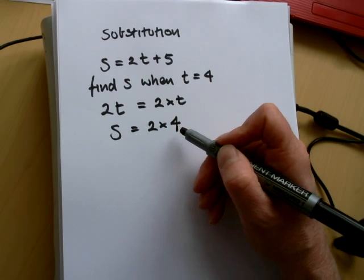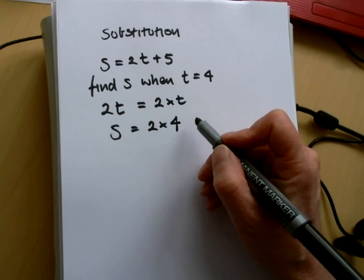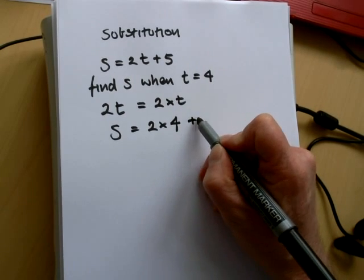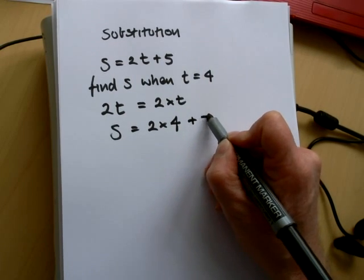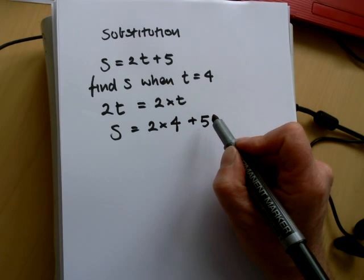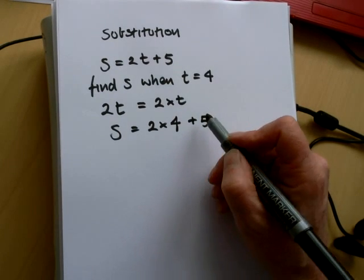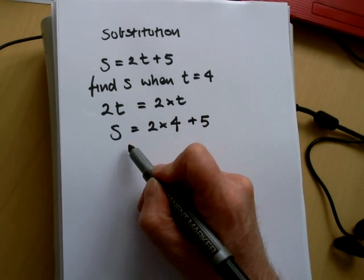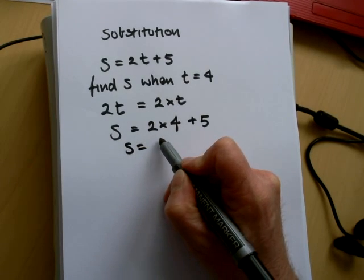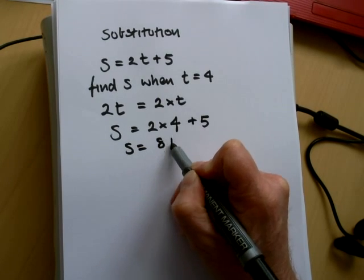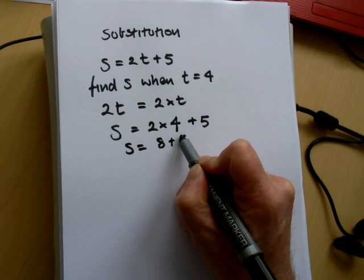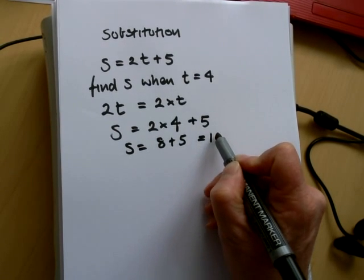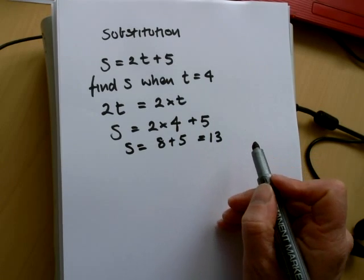So 4 comes on and t goes off. Remember the full expression says it's 2 times t, which is 4, plus 5. Now 2 times 4 is 8, so it's going to be 8 plus 5, so our answer is 13.